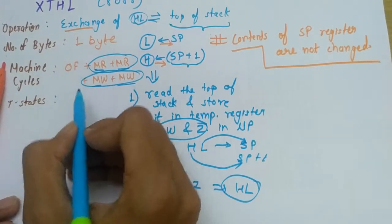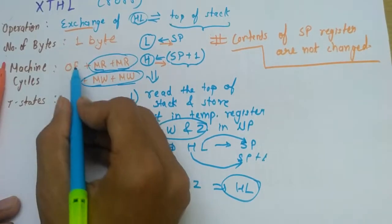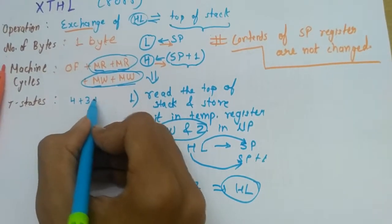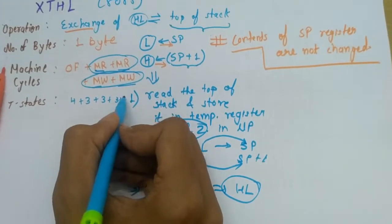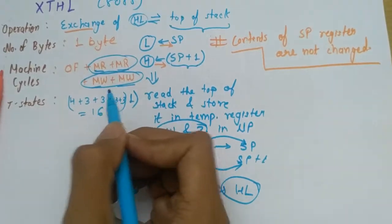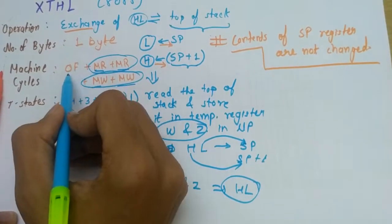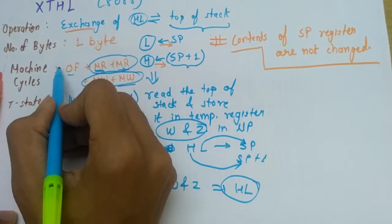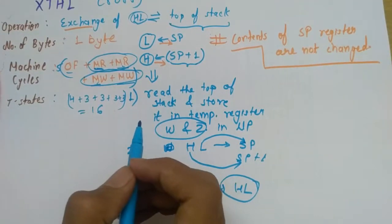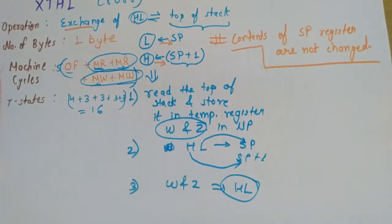Number of T-states we can calculate from this. As you can see, opcode fetch has four T-states, then all others have three, so you can make the total. These are the number of T-states, which are 16. Number of machine cycles - you can see one, two, three, four, and five - so five is the number of machine cycles.